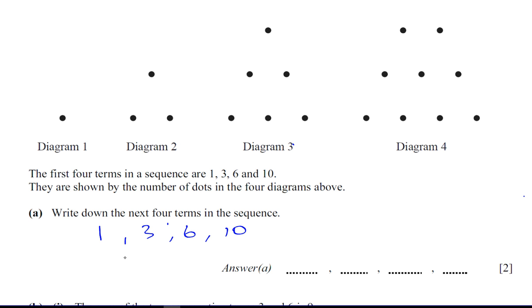You see, you have to increase by 2, then you have to increase by 3, then you have to increase by 4. So therefore, to get the next number you have to increase by 5, so the next number must be 15.